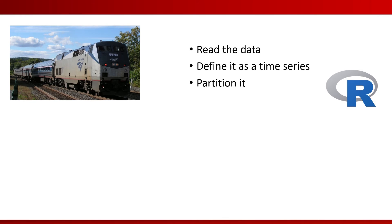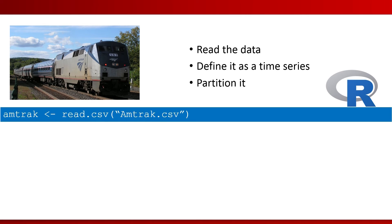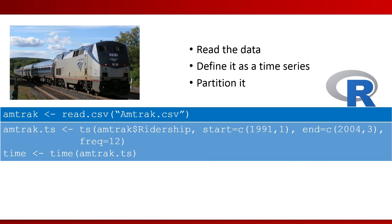Here's a small example of how we'd perform partitioning in R for the Amtrak data that we saw earlier. Here we want to keep the last 12 months in the validation period. The first line of code reads the data. The second line defines a time series object called Amtrak.ts. It defines the start and the end months of the data, and the number of periods in a year, which in this case is 12. The third line gets the time stamps of the series — here these would be a month and a year for each period.